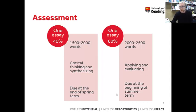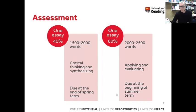The second assignment is worth 60% and is slightly longer, between 2000 and 2500 words, due at the beginning of summer term. Here you apply and evaluate knowledge from the term by organizing a lesson plan based on one of the skills — for example, speaking, focusing on one aspect like pronunciation, fluency, or accuracy. The main part is explaining the rationale for your choices using course readings, beliefs, and theories. Those are the two forms of assessment.